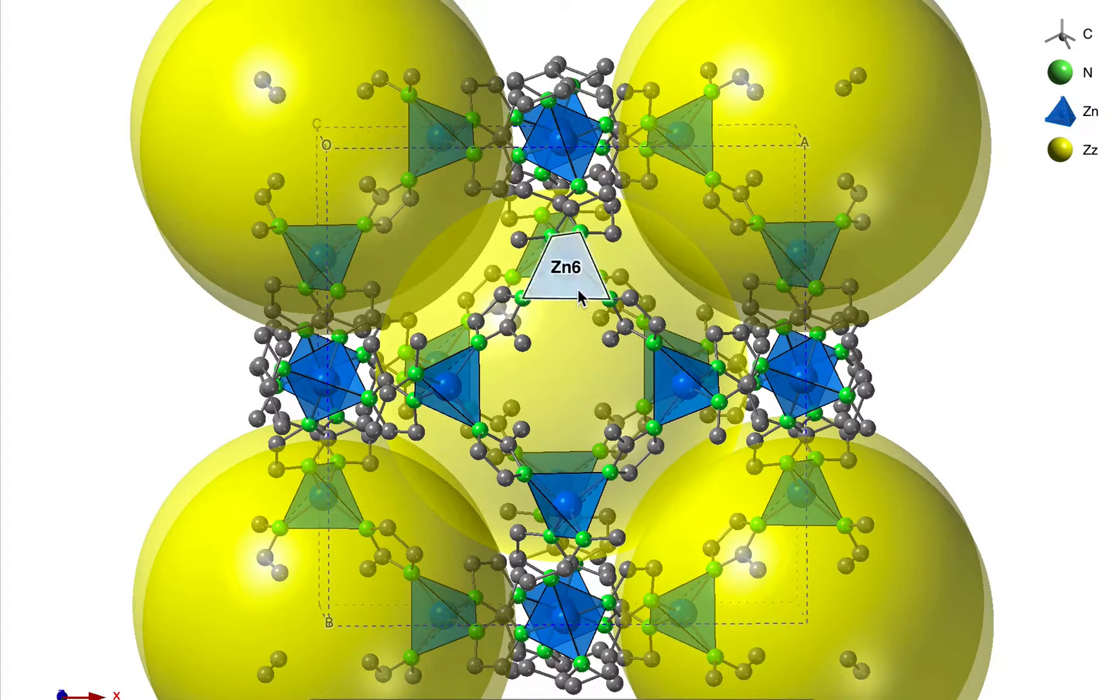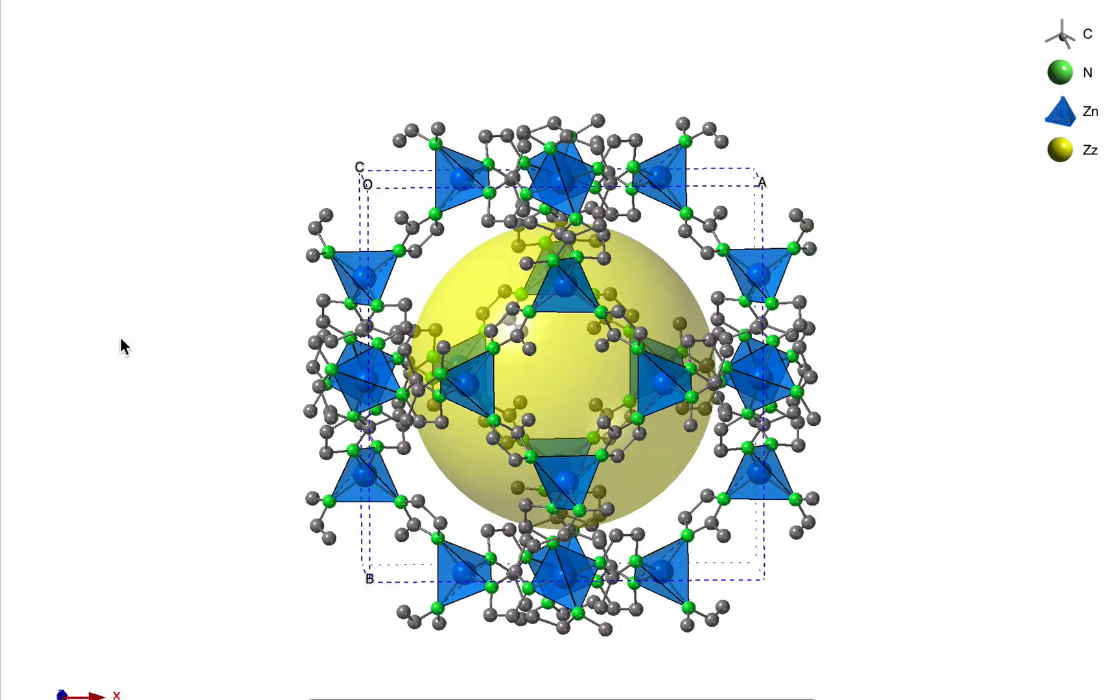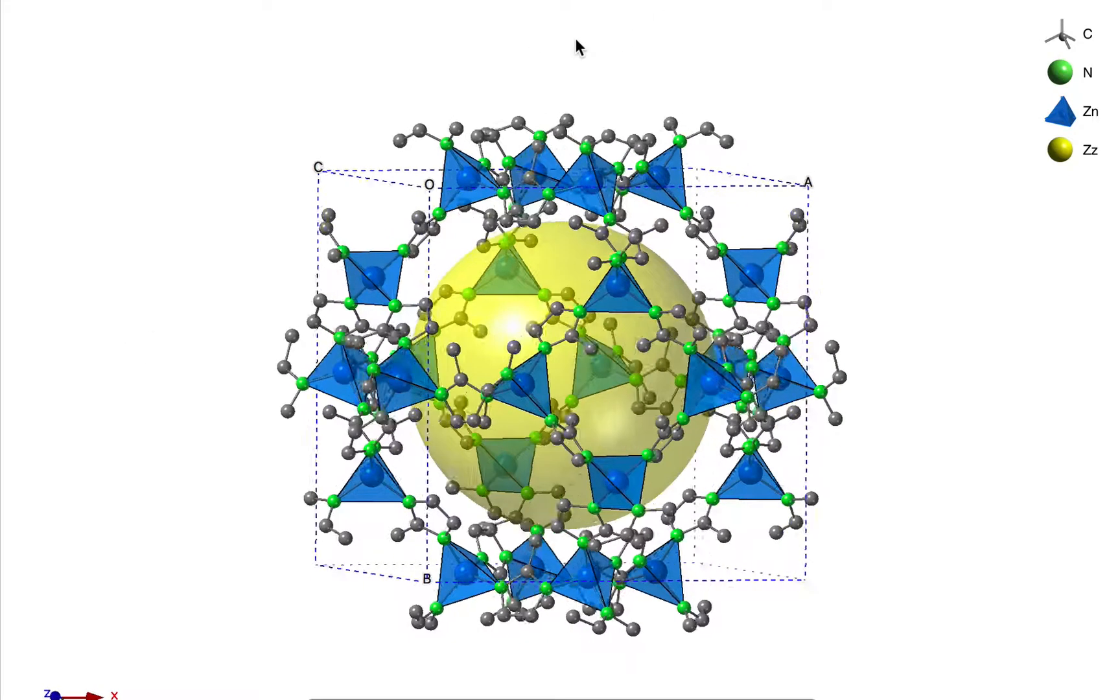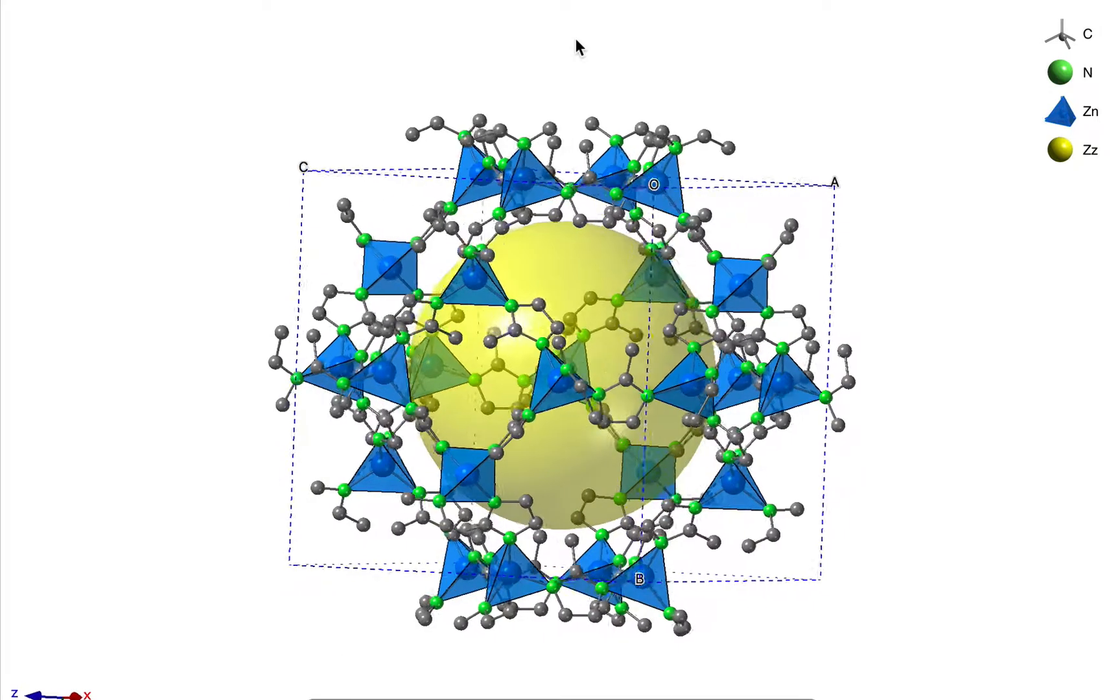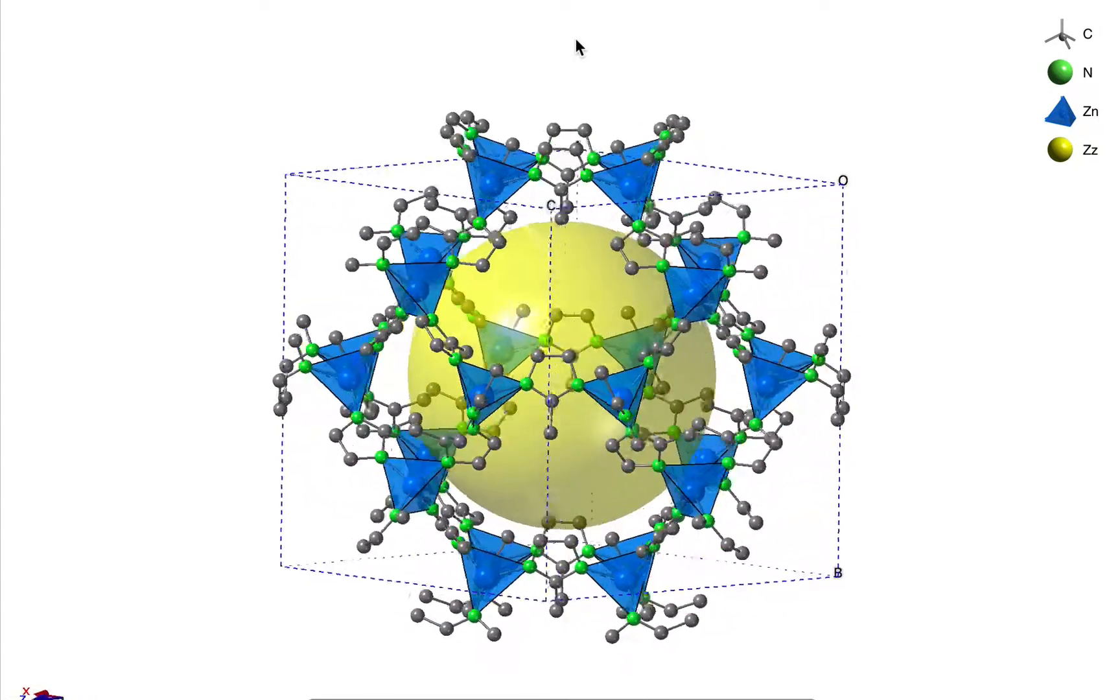I'm going to click on one atom in the framework, right-click, and choose isolate selected fragments. Now we have a nice model that shows the cage and the centroid atom inside.